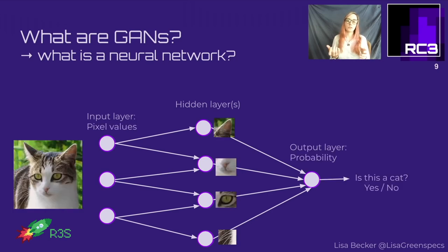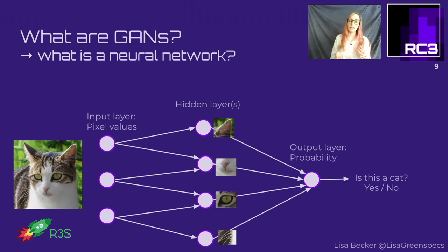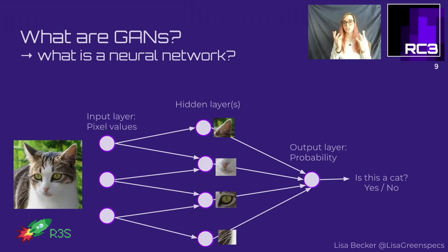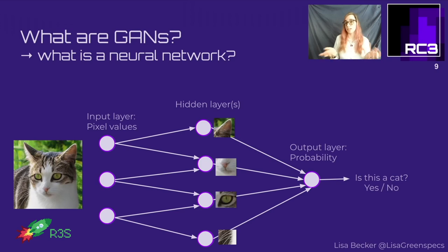For example, the input layer could be an image of a cat - specifically the RGB pixel values - which get forwarded to the hidden layers. The hidden layers perform feature extraction, checking whether there are pointed ears, an acute nose, whiskers, or the typical eye shape of a cat. This information is forwarded to the output layer, which calculates a probability of how likely the input image is actually a cat - yes or no.